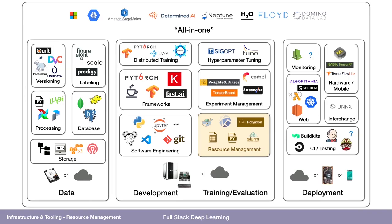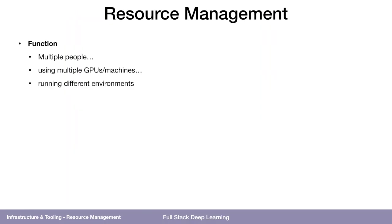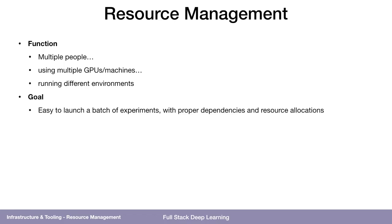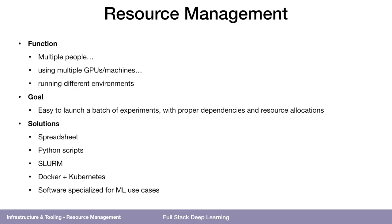Now we have our cloud instances, our own machines, or maybe just multiple GPUs on a single machine. How do we actually make use of these resources? Resource management is the problem of multiple people using multiple GPUs or machines or both, and maybe they have different requirements for their compute environment. Our goal should be that each person finds it easy to launch a batch of experiments, all the dependencies are in place, and all the resources they need are allocated. The solutions range from very low tech, like spreadsheets, to pretty high tech, like software specialized for machine learning on Kubernetes.